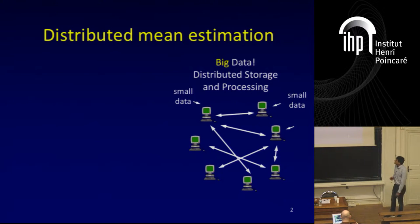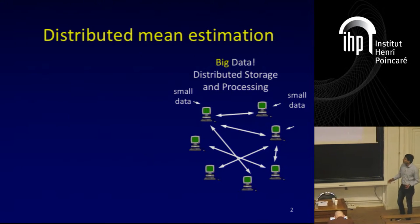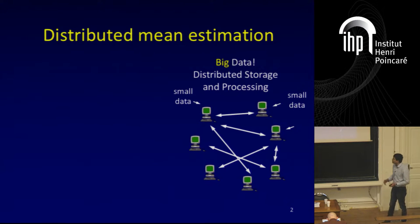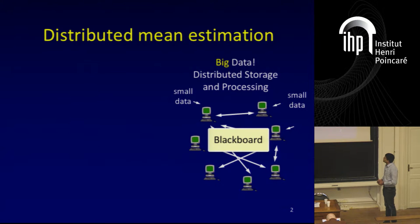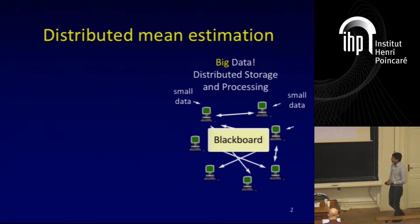Let's start with the problem setting. We have big data and all the data cannot be stored in one machine. There are multiple machines and small chunks of data are stored in various machines. These machines need to communicate in order to accomplish some task. The model of communication we will be looking at is the blackboard model, also called the broadcast model. There is a shared blackboard and the machines run an interactive protocol: machine one writes something on the blackboard, depending on that some other machine writes something, and so on.